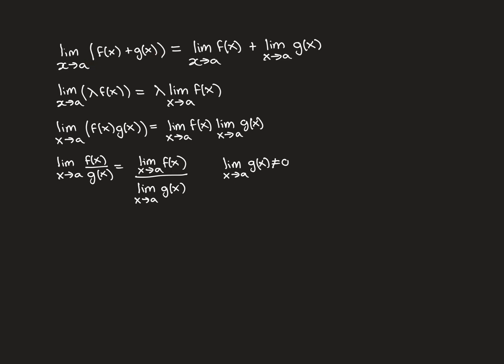The first result is that if you add the two functions together to create a third function and ask what is the limit as x approaches a of f(x) plus g(x), that equals the limit as x approaches a of f(x) plus the limit as x approaches a of g(x). You just take those two results, which are real numbers, and add them together.